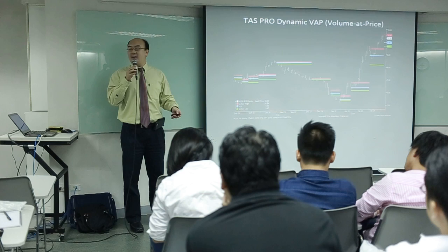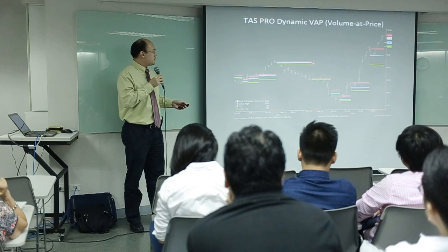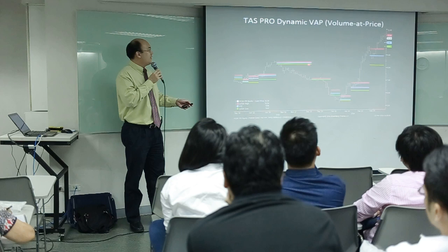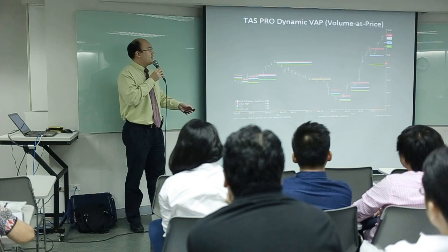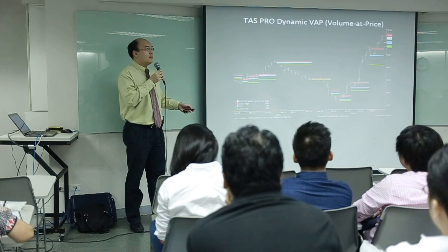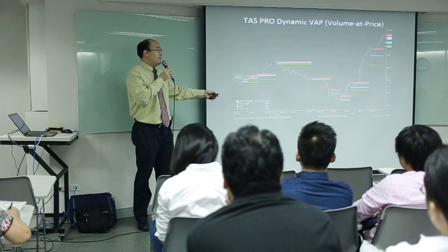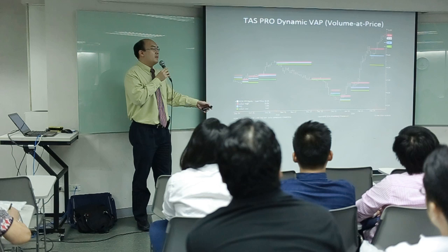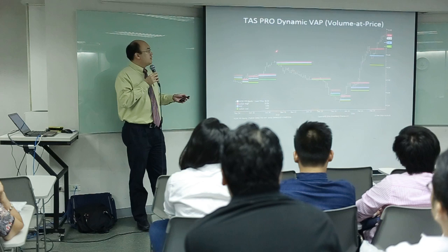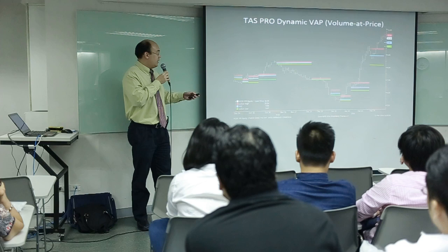I'll show you another indicator called the TASPRO Dynamic Volume and Price, or TASPRO Dynamic Buck. Notice the three lines: the red line is the resistance line, the blue line is called the point of control, and the green line is called the unfair low, or the support line. The idea here is you do not want to be short a stock that broke out from a dynamic buck setup, and you do not want to be long as it breaks down from a dynamic buck setup. The foundation of this indicator is based on the market profile.